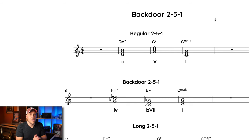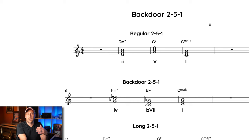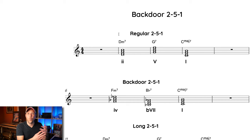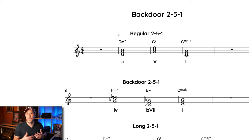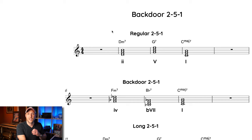So now you can see the PDF called Backdoor 2-5-1. There is no specific key for a particular instrument like saxophone or trumpet — it's just in the key of C. You should really approach it in all 12 keys as well, but I'm doing it in C for ease of reading for this video and this PDF.